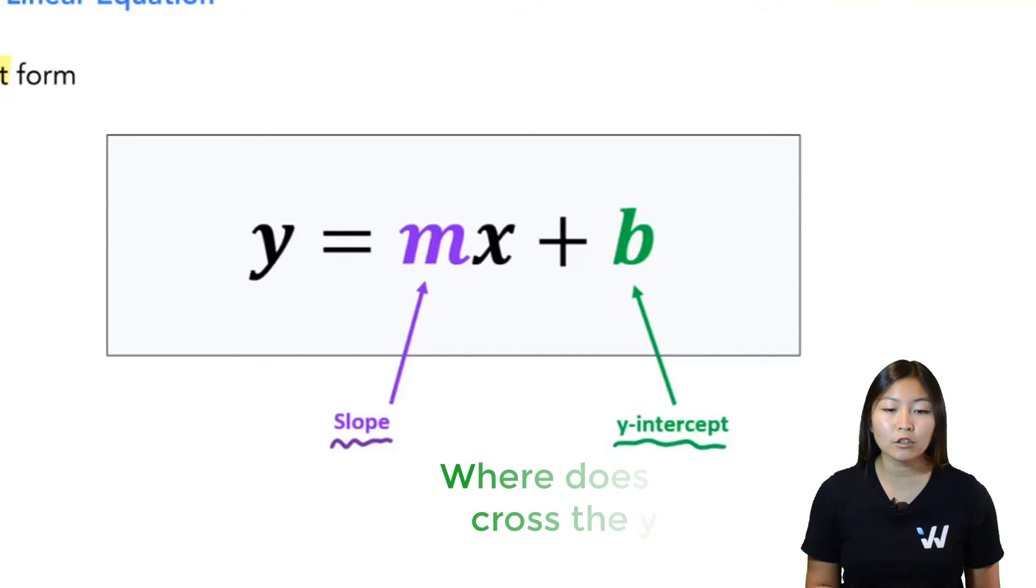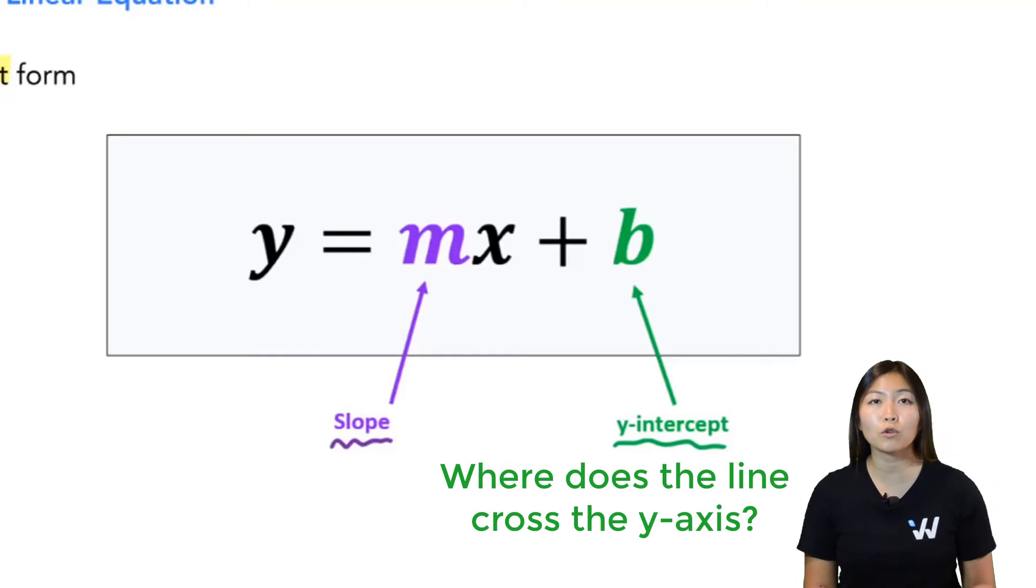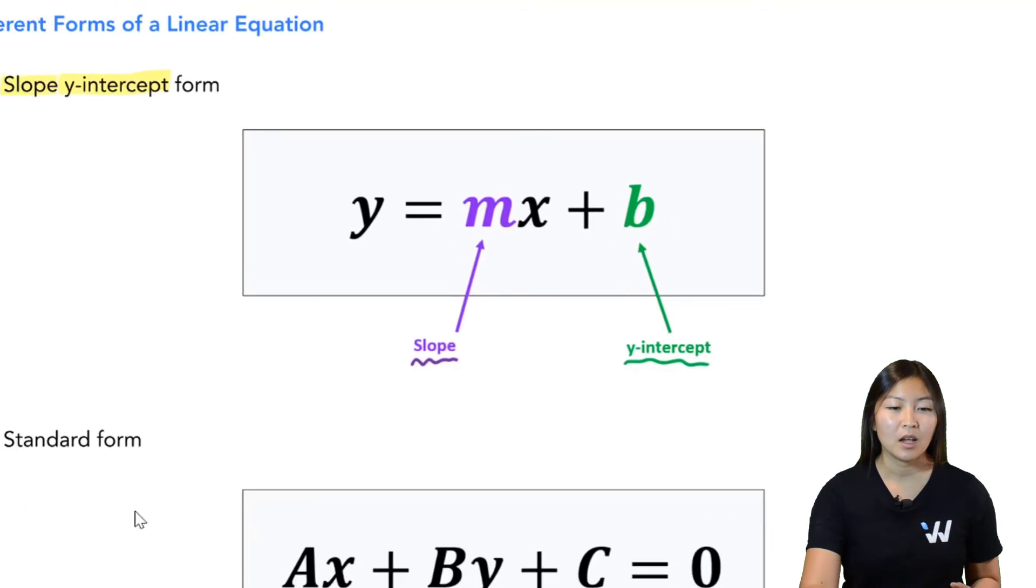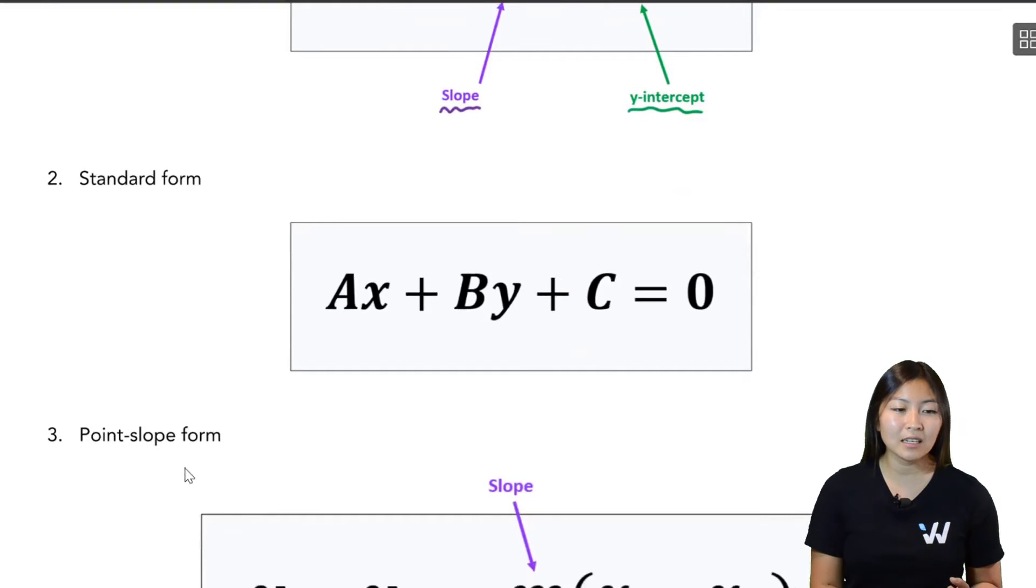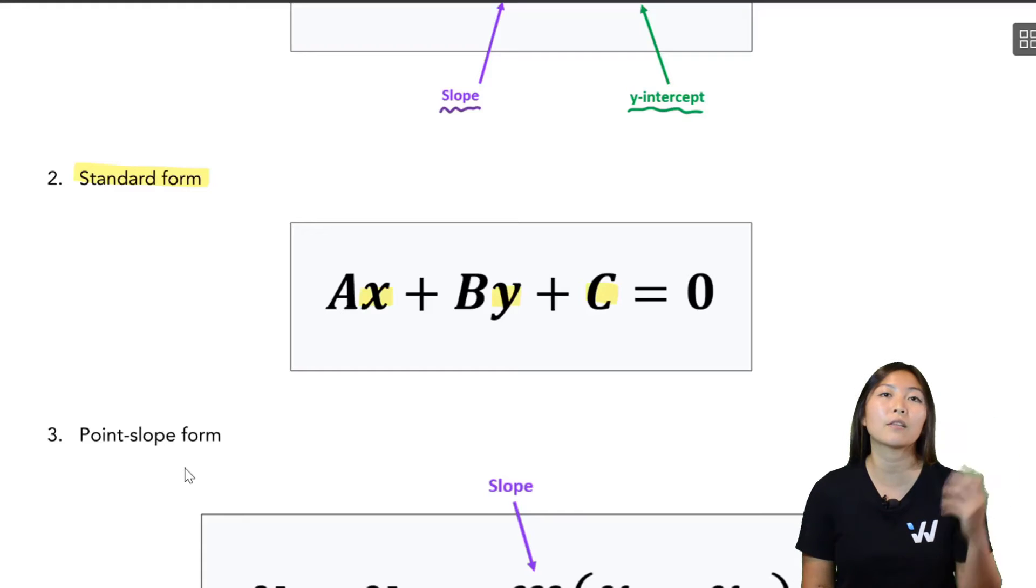b is the y-intercept. Y-intercept is where the line crosses over the y-axis, is where it meets the y-axis. Now you have another form called the standard form. It's standard form because you have all your x's, then your y's, and then your constants all on one side of the equation and the other side equals zero. Not the most useful when it comes to graphing, but sometimes we'll be asked to convert between the forms.